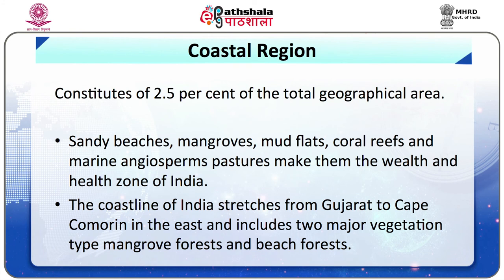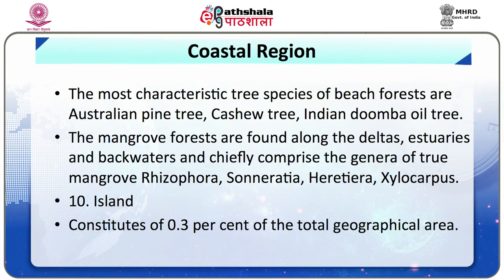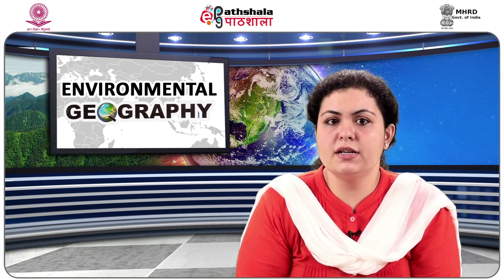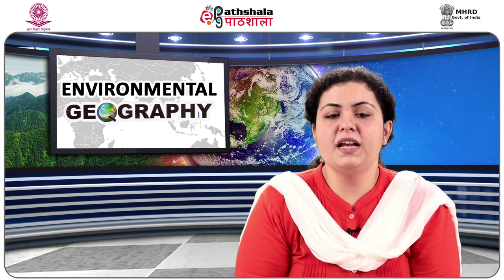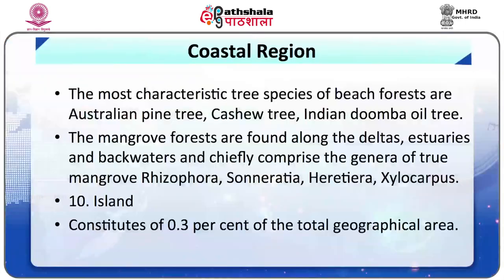Ninth, the Coastal Region, constituting 2.5% of the total geographical area. Sandy beaches, mangroves, mudflats, coral reefs and marine angiosperm pastures make this a wealth and health zone of India. The coastline of India stretches from Gujarat to Cape Comorin in the east and includes two major vegetation types: mangrove forests and beach forests. The most characteristic tree species of beach forests are Australian pine, cashew tree and Indian Duba oil tree. A total of 25 islets constitute the Lakshadweep, which are of coral origin and have a typical reef lagoon system rich in biodiversity. The mangrove forests are found along deltas, estuaries and backwaters, chiefly comprising the genera Rhizophora, Sonneratia, Aegiceras and Xylocarpus.